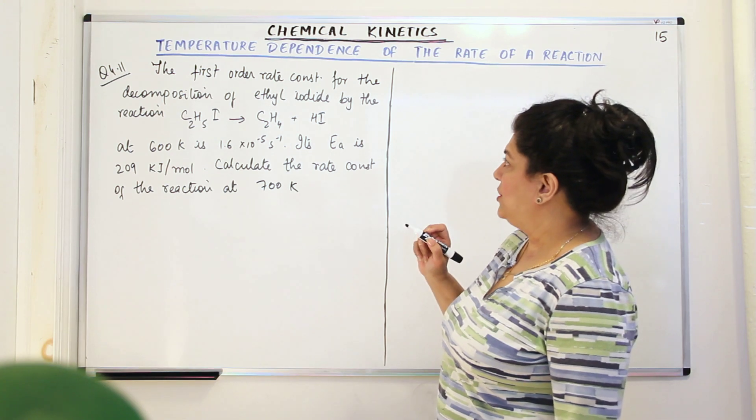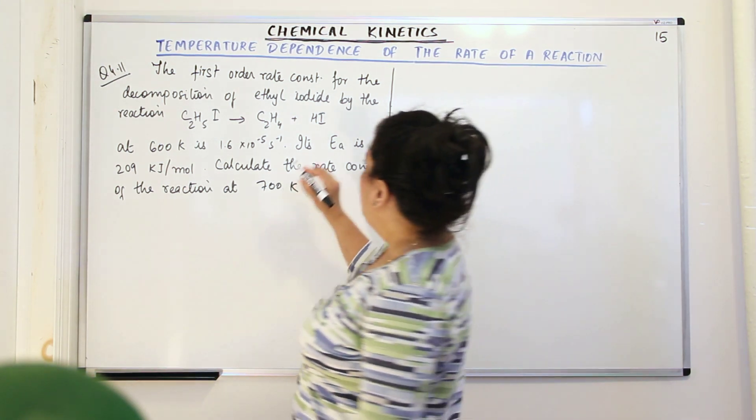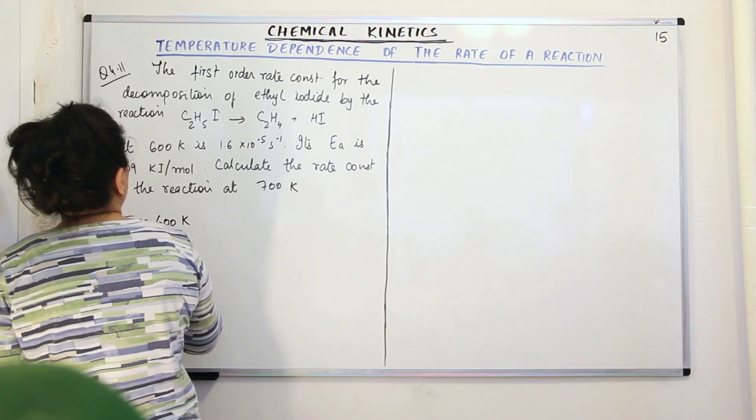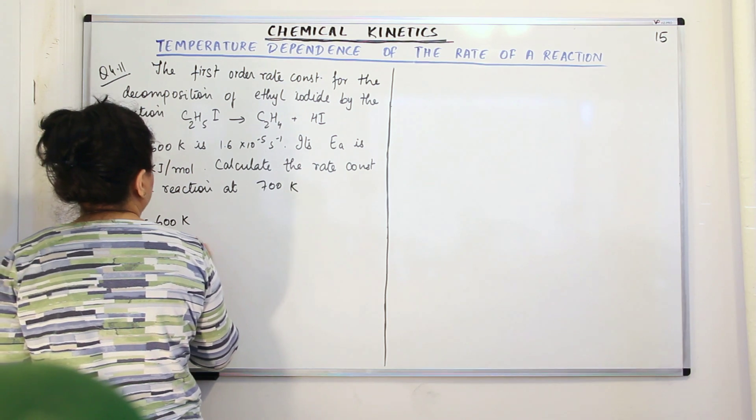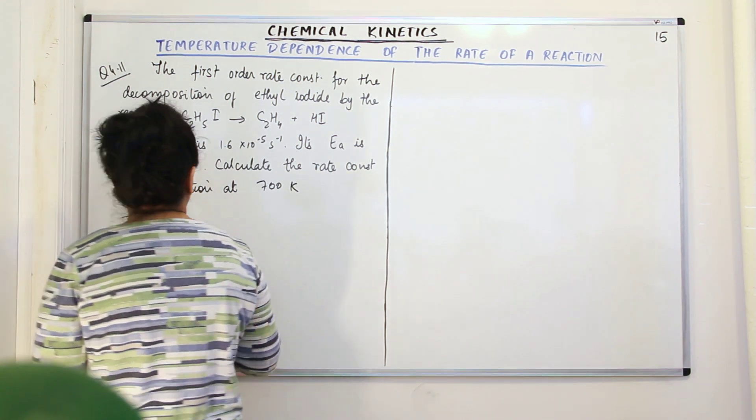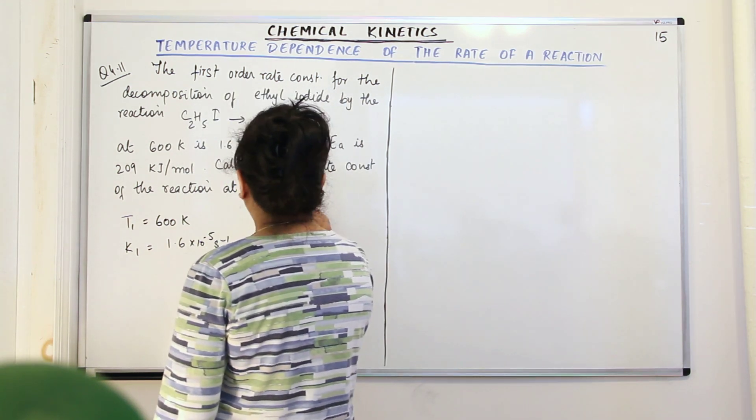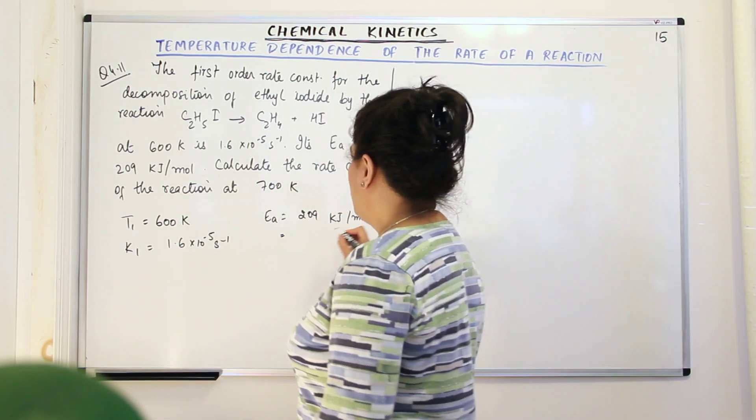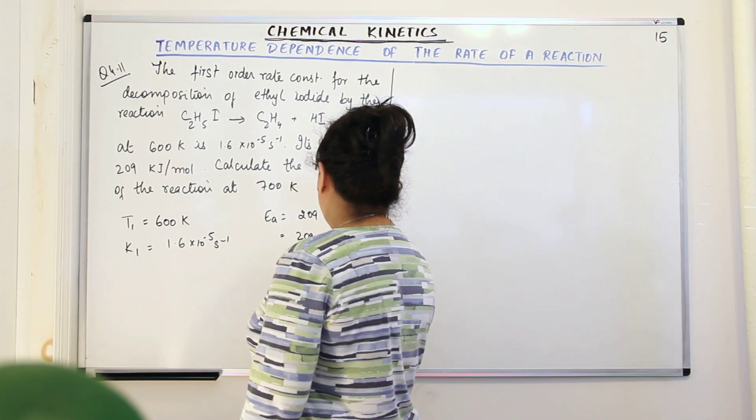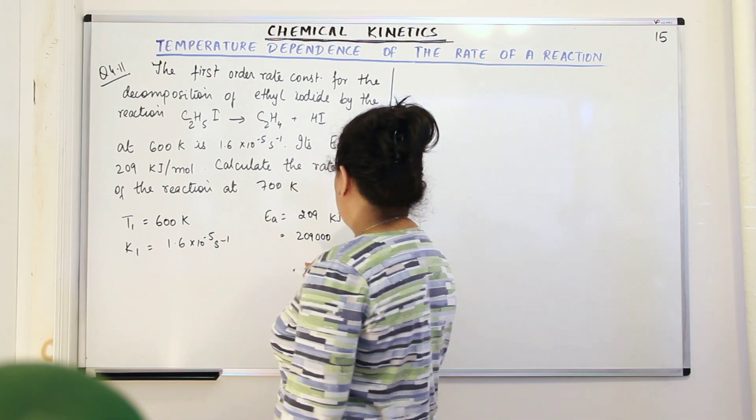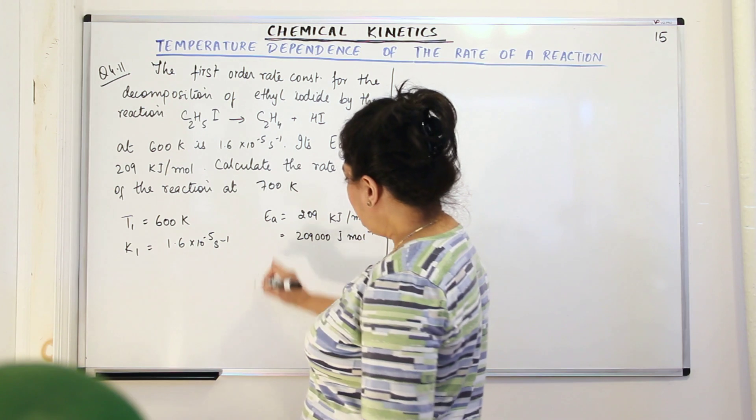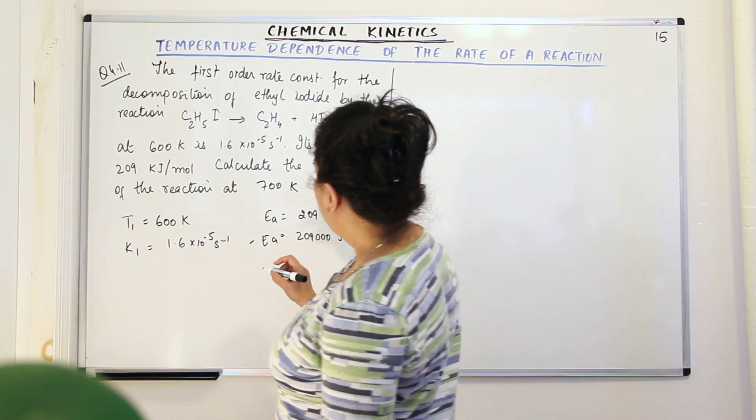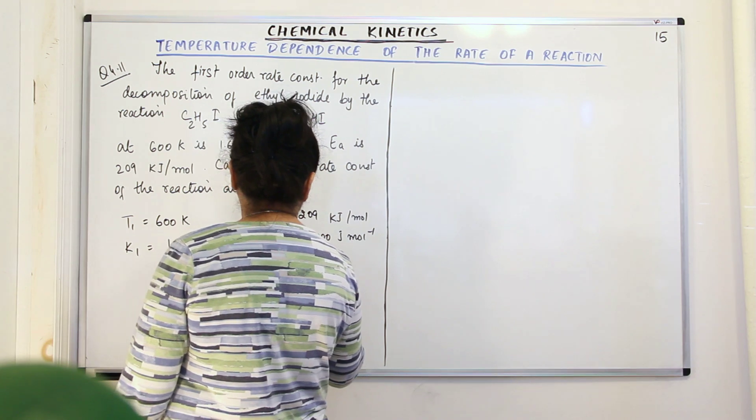Let us first see what all is given to us. It is a first order reaction for the decomposition of ethyl iodide, the reaction is given. And T1 is equal to 600 Kelvin. And the rate constant K1 is equal to 1.6 into 10 to the power minus 5 per second. Its Ea is given to you, which is 209 kilojoules per mole. Now this can be equal to, if you write it in joules per mole, would be 209 multiplied by 1000 joules per mole. That is Ea. We'd be using this one. And the value of T2 is given to us. T2 is equal to 700 Kelvin.